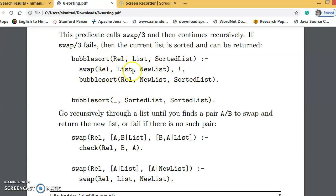If swapping did not happen, then we want to copy this list into the final answer as it is. If swapping does happen, then we want to call the bubble sort algorithm again with the new list.